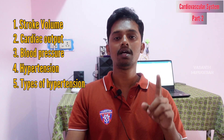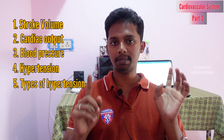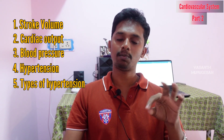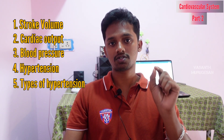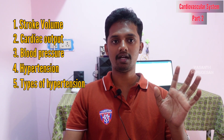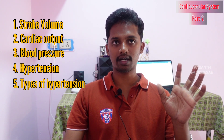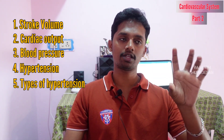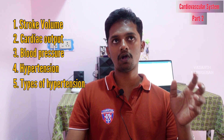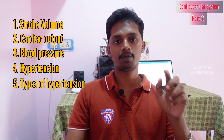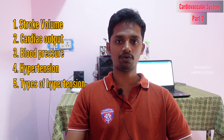The heart rate is calculated in one minute. So, heart rate multiplied by stroke volume gives cardiac output. For example, if the stroke volume is 70 ml and the heart rate is 72, then 70 ml multiplied by 72 beats per minute equals the cardiac output. So these are the two terms.